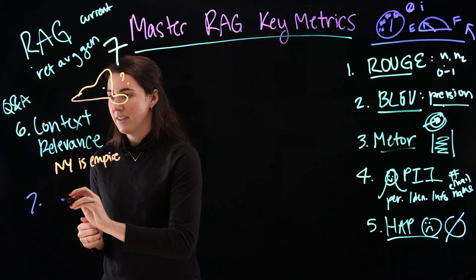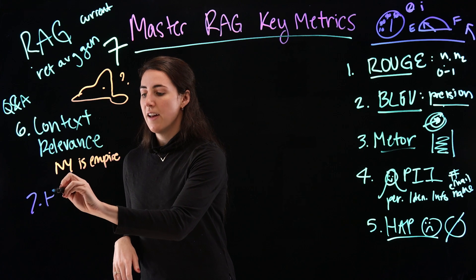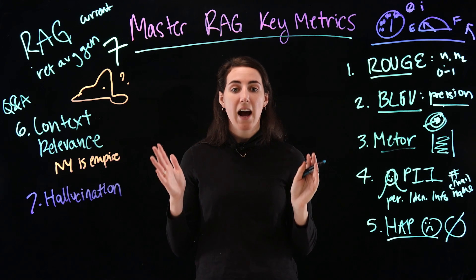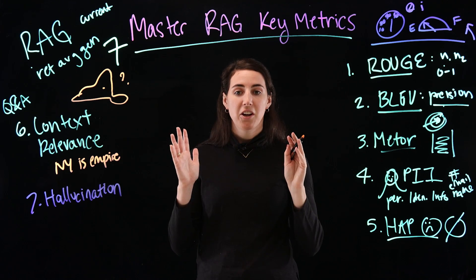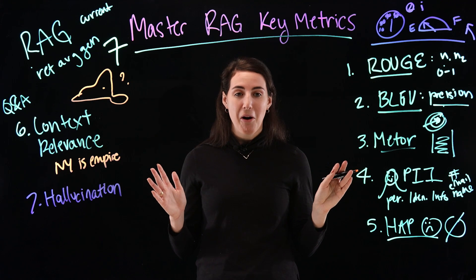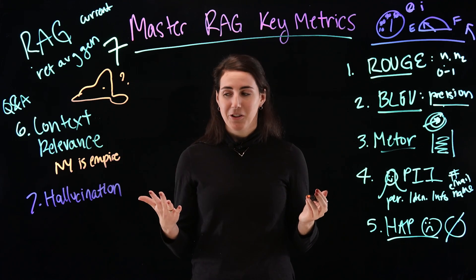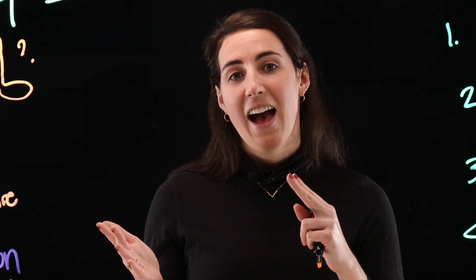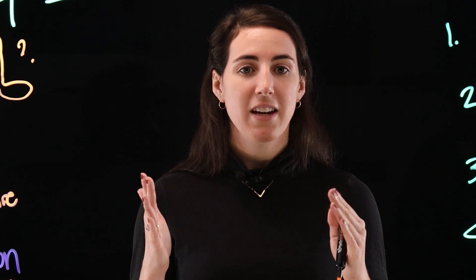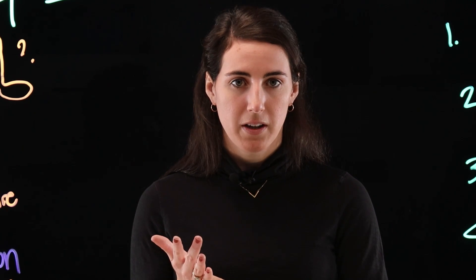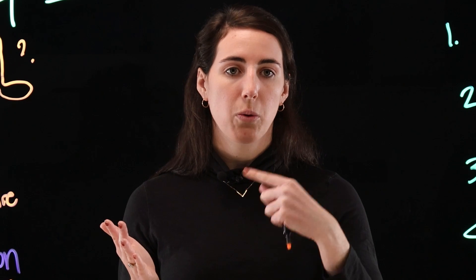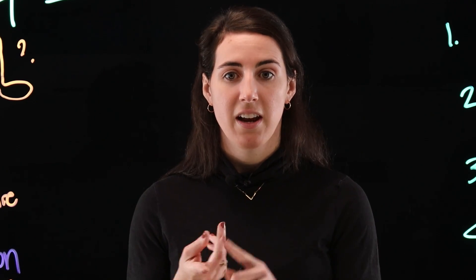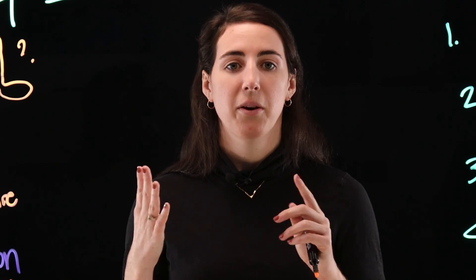Finally, we have something that's extremely important: hallucination. We want to make sure the model is not giving answers that are incorrect or completely wrong while making us think they're correct. Back to our New York example — to have a low hallucination score and a high relevance score, we want answers to both questions: 'New York is on the East Coast, located to the north of New Jersey, to the west of Connecticut, and the capital is Albany.' That's no hallucination and a very context-relevant response.